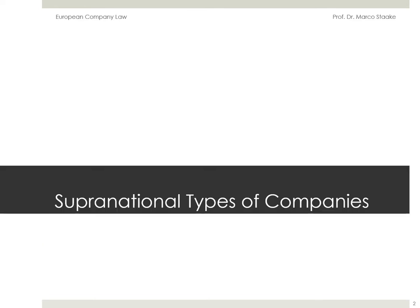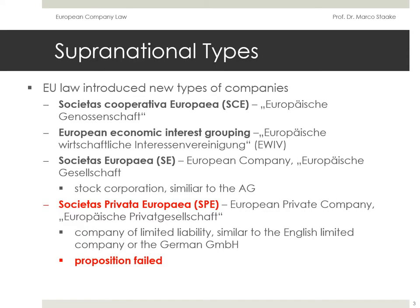Apart from legal forms of national laws, the European integration has introduced some supranational forms to the world of company law. We will now look at these European legal forms and have a quick insight into the Societas Europaea as the most important specimen. The European Union has enacted multiple regulations to create legal forms for companies under EU law. The most notable of these distinctly European legal forms are the European Economic Interest Grouping, the Societas Cooperativa Europea, and the Societas Europaea. The introduction of these different types of companies is supposed to further the economic integration of the common market and facilitate cross-border cooperation.